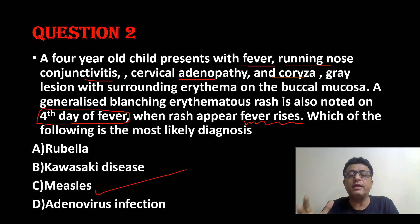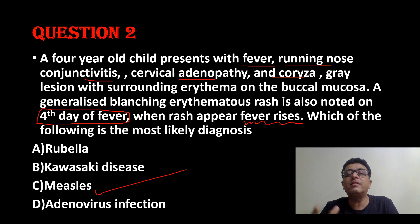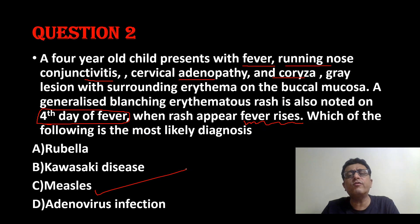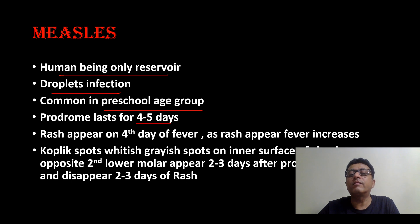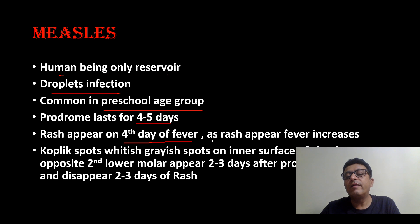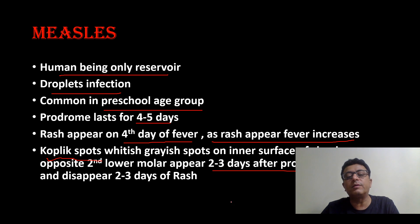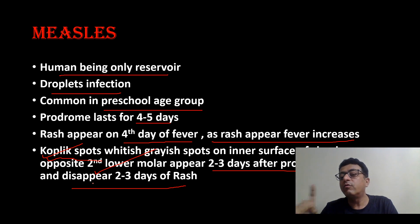Measles is diagnosed clinically — very common in childhood. It is highly communicable; if one child in a class develops measles, the whole class can develop it. Measles is caused by an RNA virus. The only reservoir is human beings; spread by droplet infection. Common in preschool age group. Prodrome includes running nose, mild cough, and conjunctivitis lasting four to five days. Rash appears on the fourth day of fever and as rash appears, temperature increases. Koplik spots — whitish-gray spots on the inner surface of cheeks opposite the second molar — appear two to three days after prodrome symptoms and disappear two to three days after prodrome symptoms.